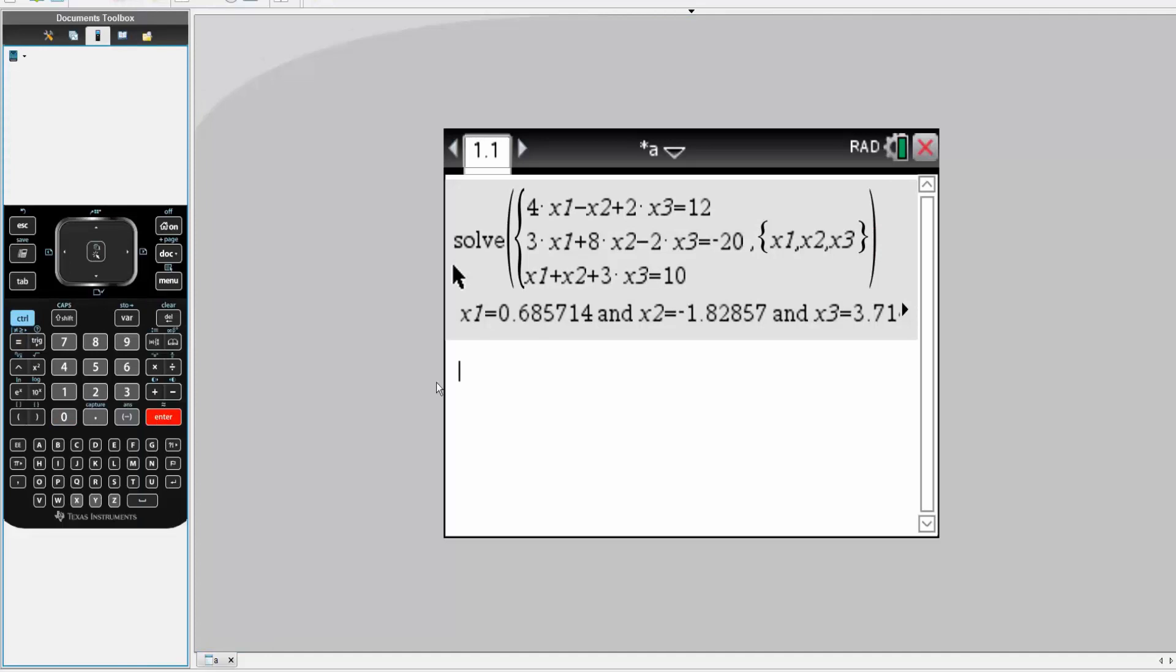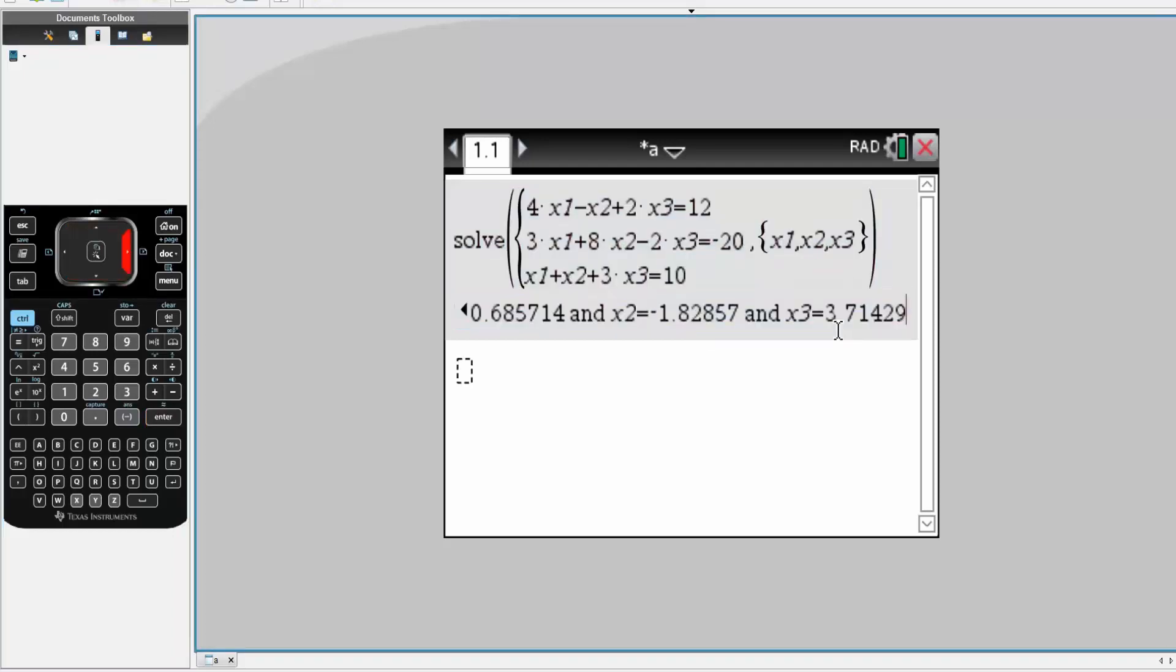And so the actual answer for x1 is 0.686. x2, negative 1.829. And x3, it was 3.714. What we got after three iterations for x1 was 0.664. So it's off by like 0.02. x2, we got negative 1.798. So again, very small amount. And x3, we got 3.711. So it was very close.